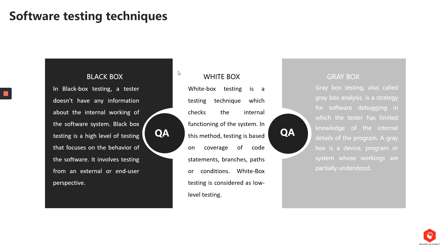White box testing is a technique which checks the internal functioning of the system, opposite to the black box. Testing is based on coverage of code statements, branches, paths, or conditions. It is considered low-level testing and is also called glass box, transport box, clear box, or code-based testing. The white box testing method assumes that the path of the logic in a unit or program is known. Gray box testing is a technique to test a software product with partial knowledge of the internal workings — something between black box and white box.